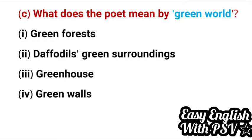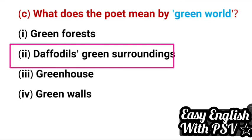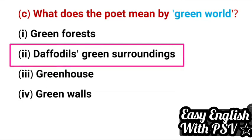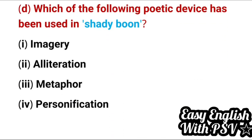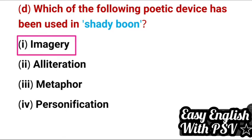Options for 'green world': green forest, daffodils' green surrounding, green house, green walls. Correct answer: daffodils' green surrounding — it refers to the surroundings of the daffodil flower. Question 4: Which poetic device has been used in 'shady boon'? Options: imagery, alliteration, metaphor, personification. Correct answer: imagery — 'shady boon' uses imagery.